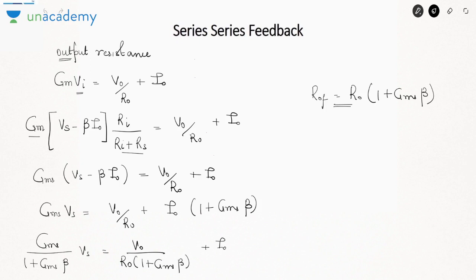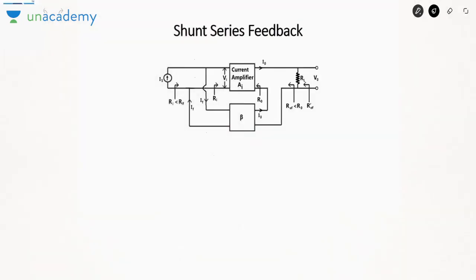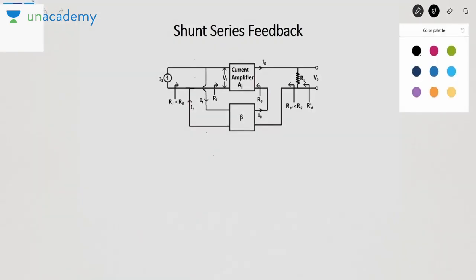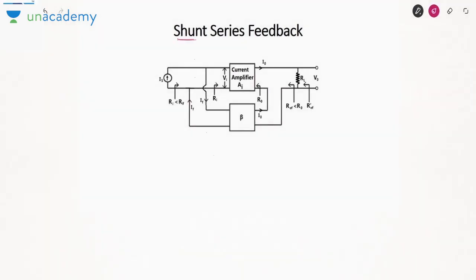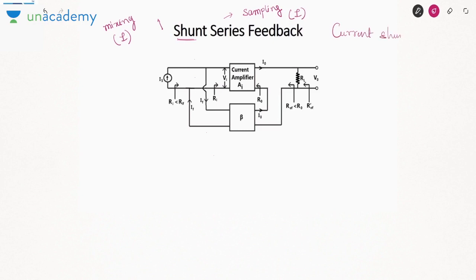Moving on to the last feedback configuration: shunt-series feedback. Shunt represents the mixing — if mixing in parallel, we are mixing current. Series represents sampling — if picking a quantity from series, we pick current. So this can also be called current-shunt feedback or a current amplifier, or more specifically a current controlled current source, because at both the input and output sides we have current.